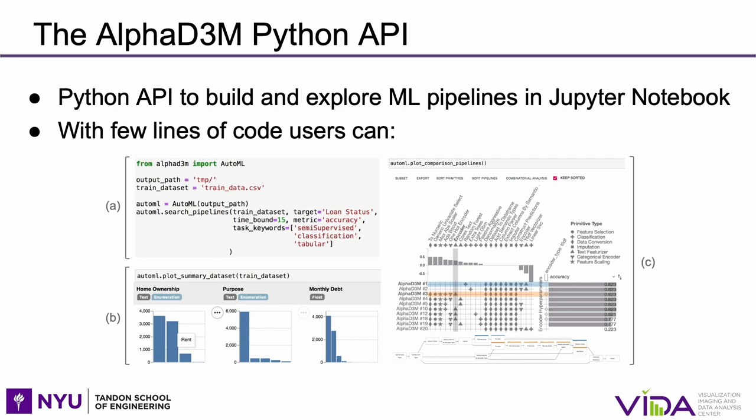AlphaD3M is implemented in Python and can be used via PIP installation or Docker. The API supports the building and exploration of machine learning pipelines within a Jupyter Notebook environment. With a few lines of code, users can synthesize end-to-end machine learning pipelines. This API allows users to define a problem, explore summaries of their input dataset, get model summaries, and analyze and compare models with respect to their performance scores and prediction outputs.